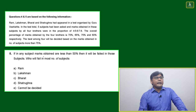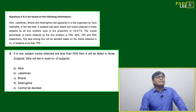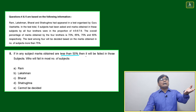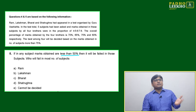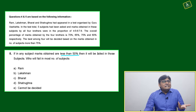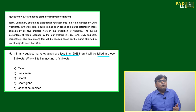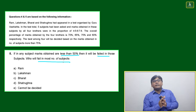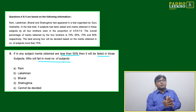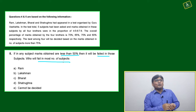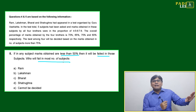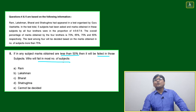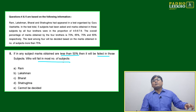Question number five: if any subject marks obtained are less than 50%, you are calculating the marks of all four brothers in five subjects. If they are getting less than 50%, they will be failed in those subjects. Who will fail in the most number of subjects? You should not create perceptions - don't think like 'it must be Ram' or 'it must be Lachman.'